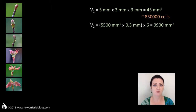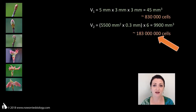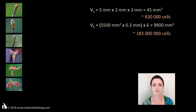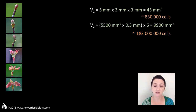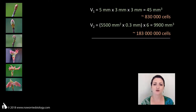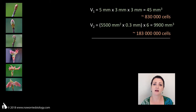This volume would be capable of holding 183 million plant cells. Would it be possible for the cells to divide fast enough to go from 830,000 to 183 million in just a few days? To keep things simple, let's assume that a cell cycle lasts 24 hours, meaning that a cell is able to divide every 24 hours.